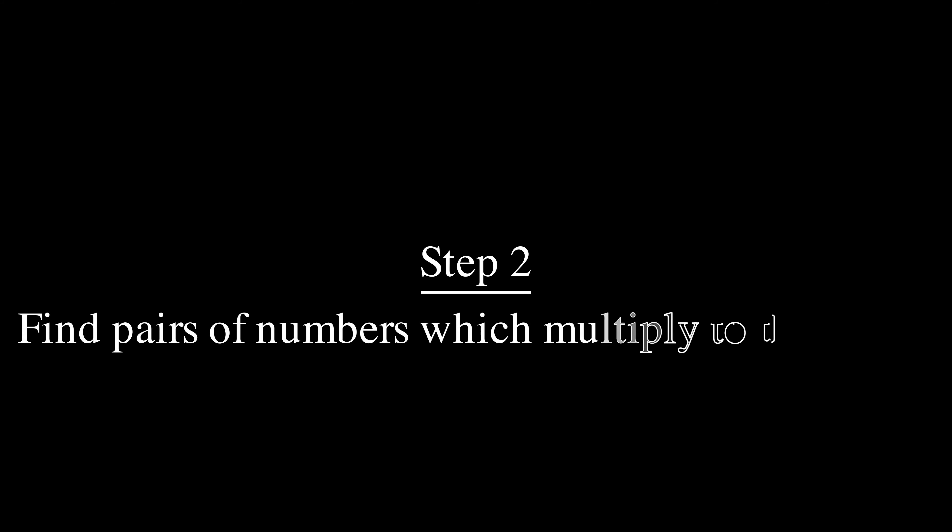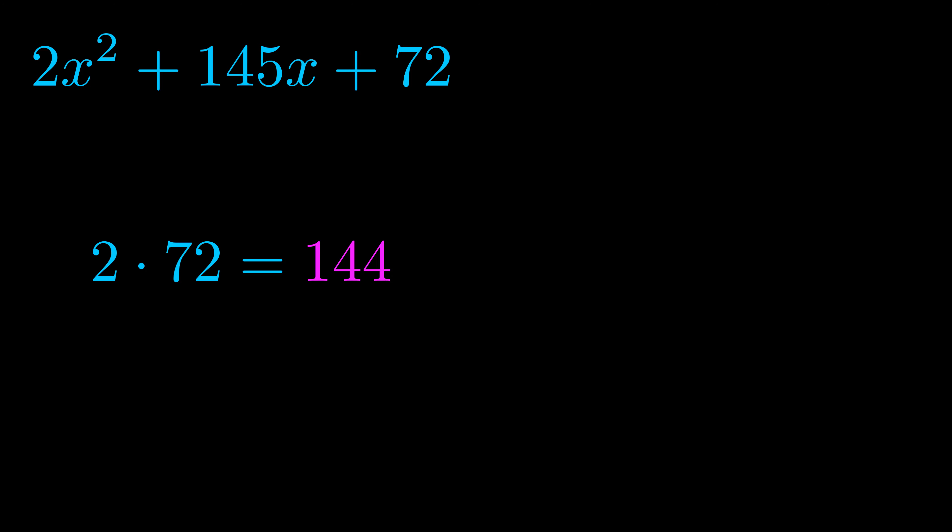Step two is to try to find all of the pairs which multiply to this number. Now turns out you don't really need to find all of them but go ahead and write down as many numbers as you can that multiply to the magenta value for now. Pause the video and resume when you're ready to continue.